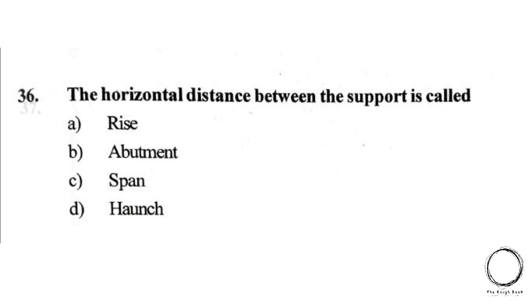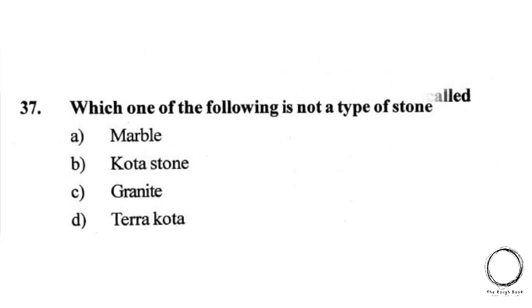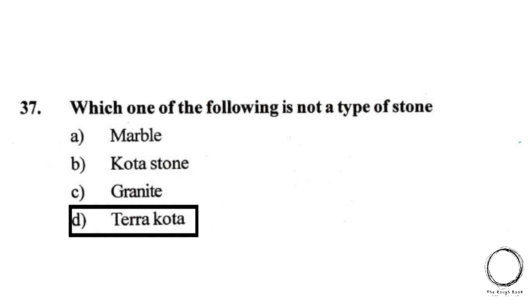Moving on: which one of the following is not a type of stone? Options: A) Marble, B) Kota stone, C) Granite, D) Terracotta. The right answer is D, Terracotta.